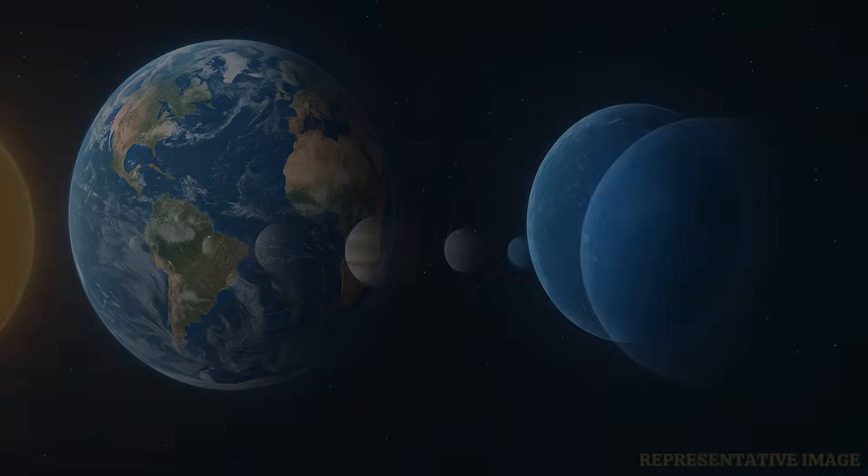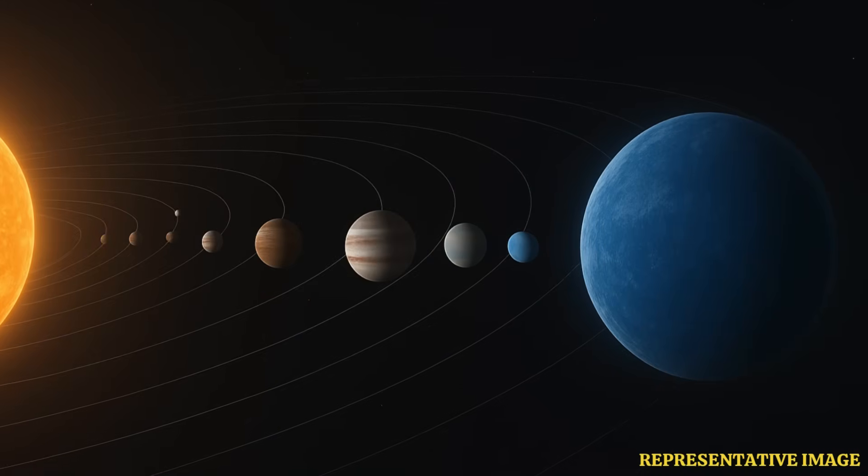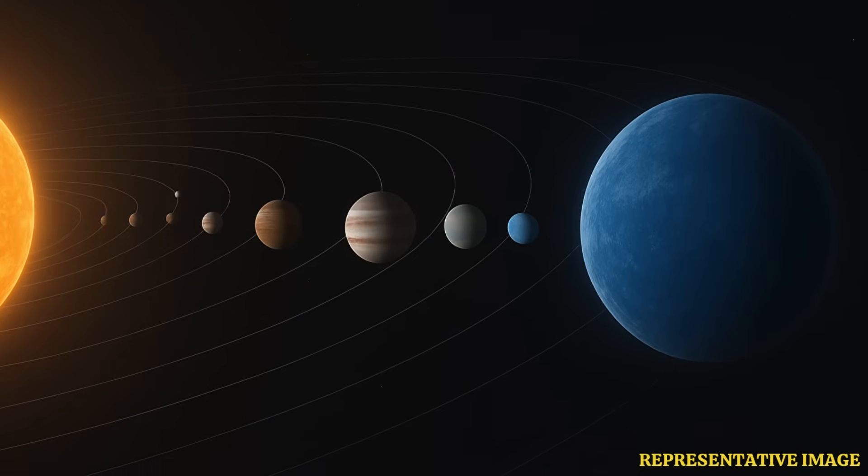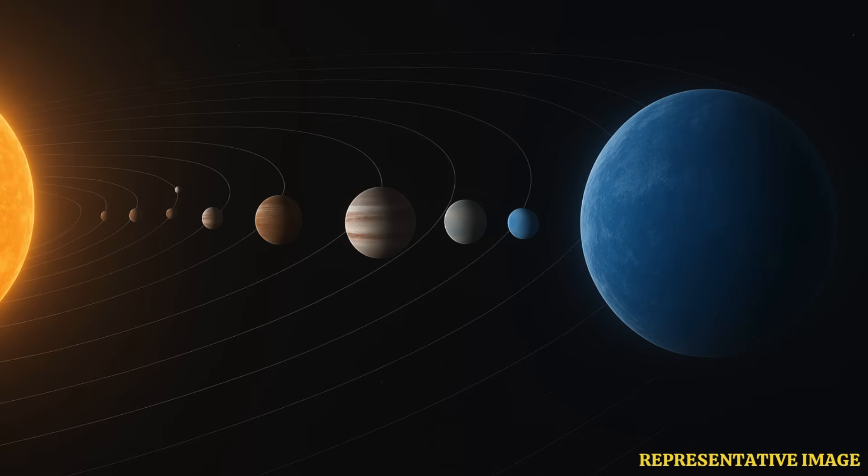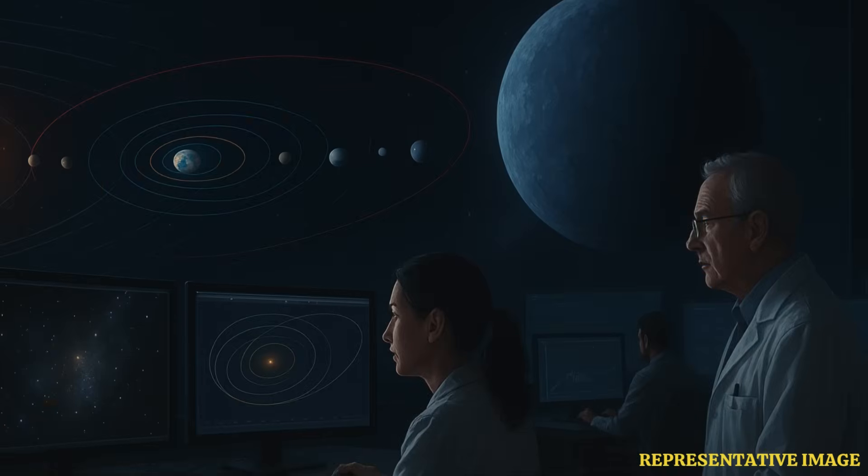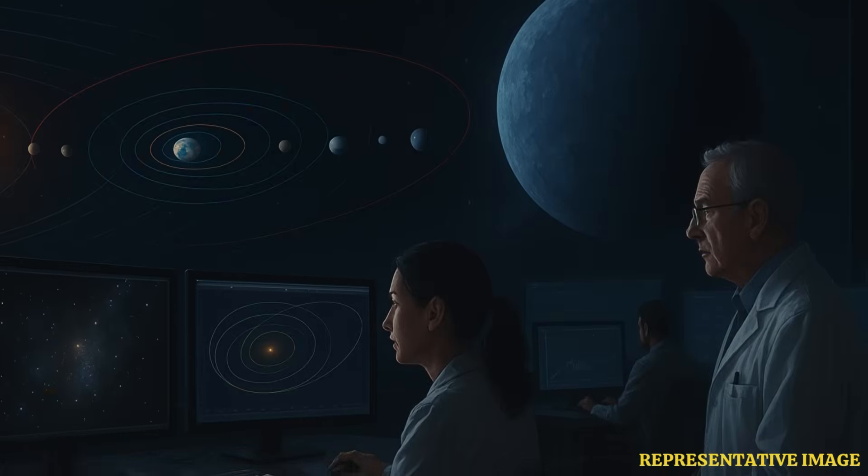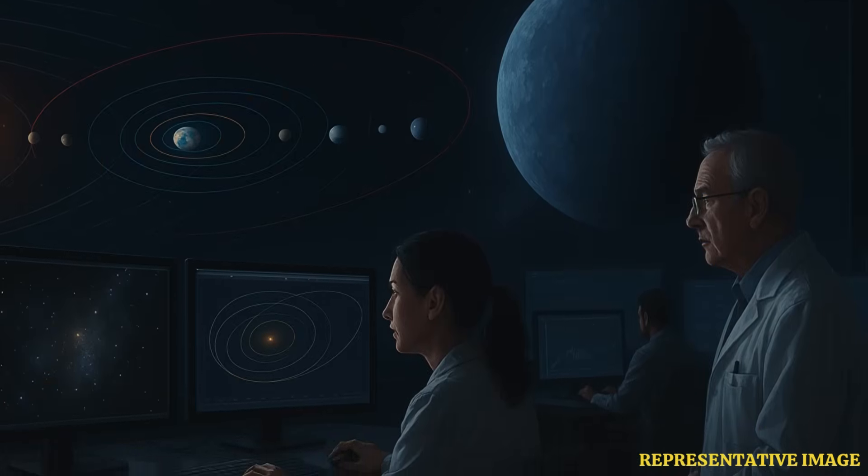University of Bordeaux's astrophysics laboratory researcher and lead author Sean Raymond said, the survivor planets have eccentric orbits which are like the scars from their violent pasts. So a planet inside the Oort cloud is likely to have a significantly elongated orbit which is very different from the near-perfect circular shape of the Earth.